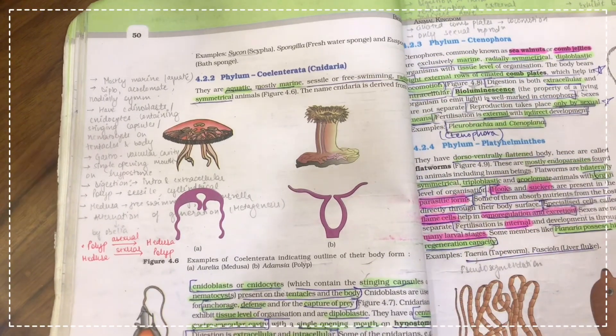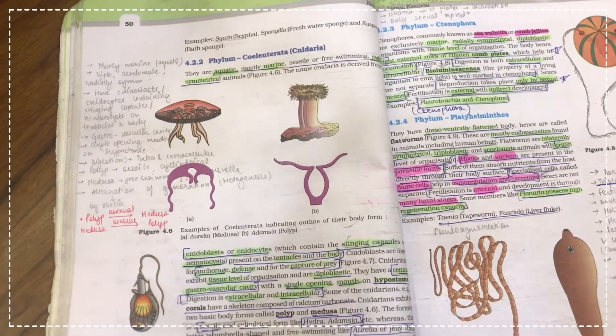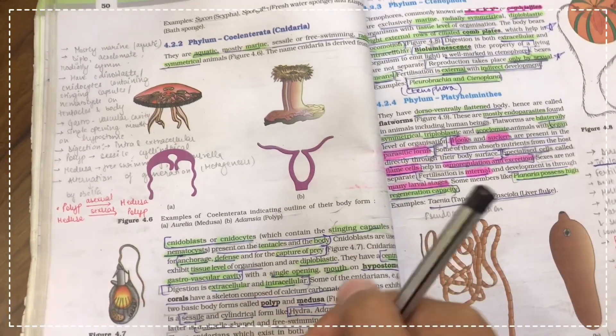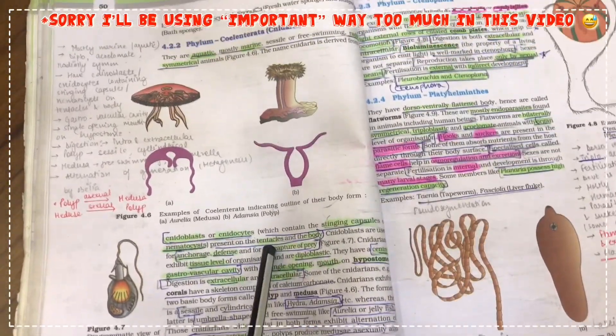For an example, let us take the phylum Cnidaria or Nidaria. First, I read all what is written in the paragraph, like everything I read. Then I highlight some of the important things that I find are important.